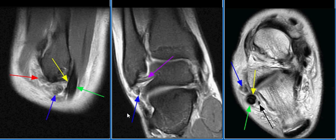The posterior tibiofibular ligament is intact, as seen on this image with the purple arrow. The anterior tibiofibular ligament is also torn at its talar attachment with thickening of the fibers, as seen on this image with the red arrow.